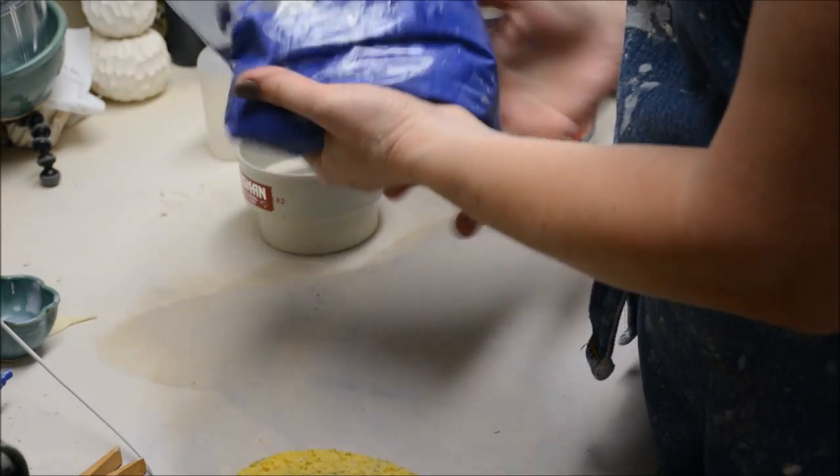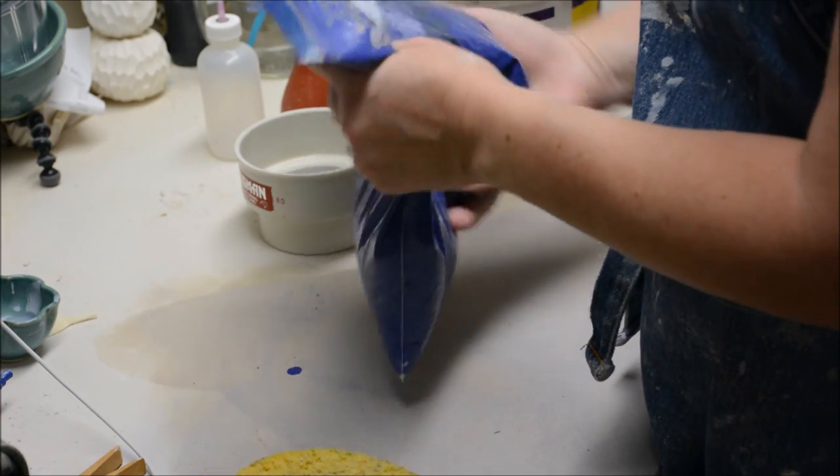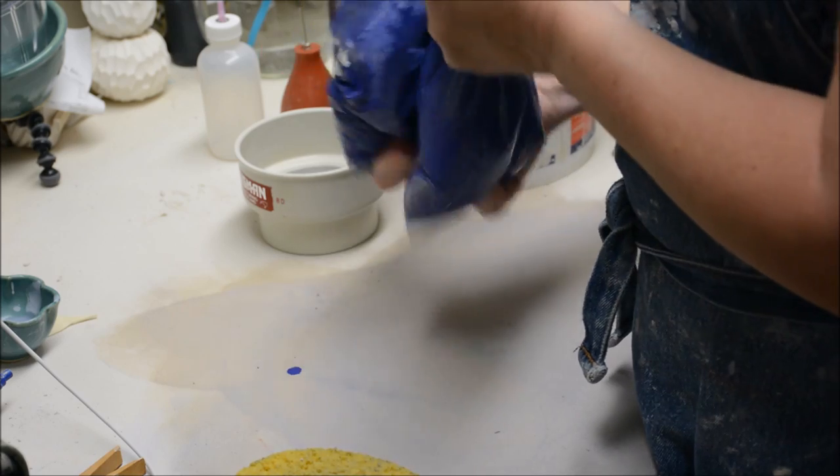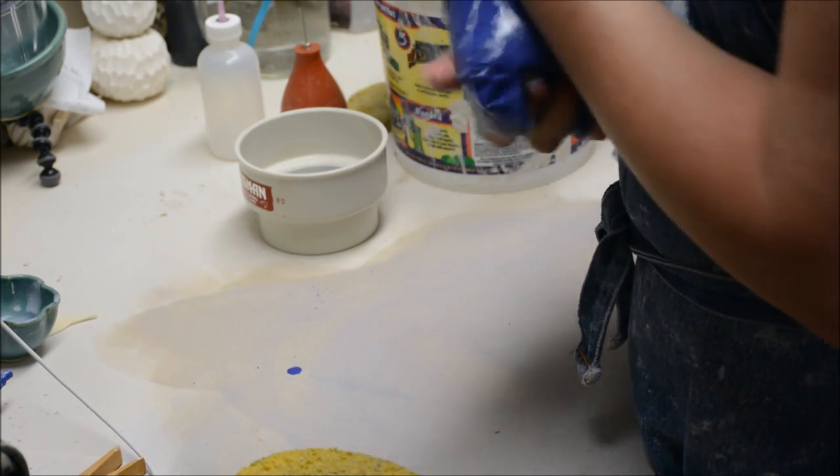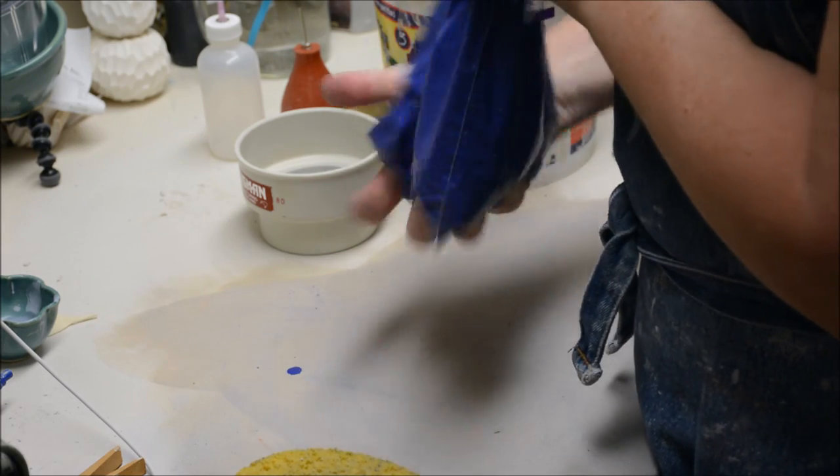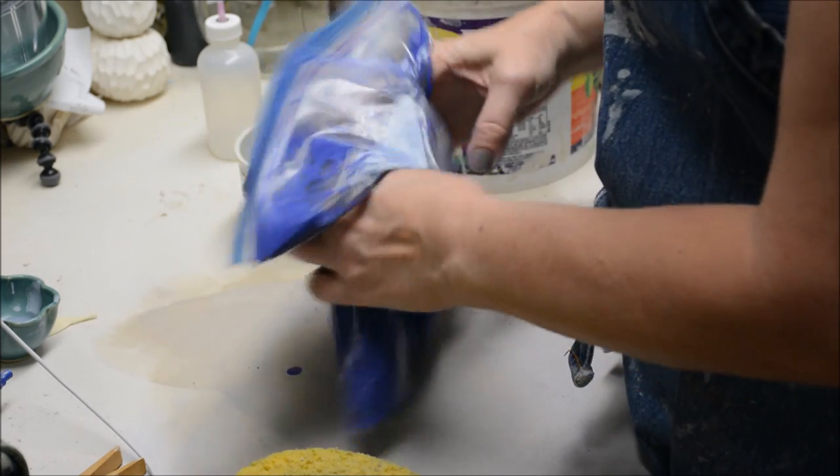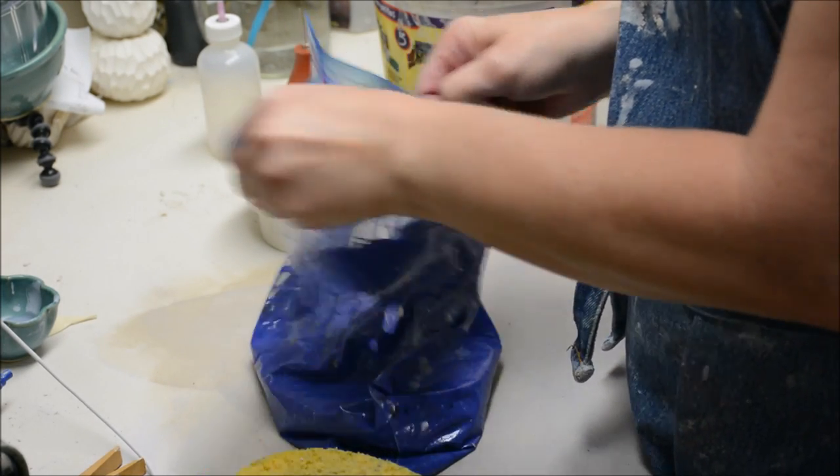Because I am going to be using this to stain a clay body rather than just using it as a slip, I did decide to add a little bit more of the mason stain to it. Because once I add it to my white clay body, it will end up becoming quite a bit lighter. And that looks pretty well incorporated.